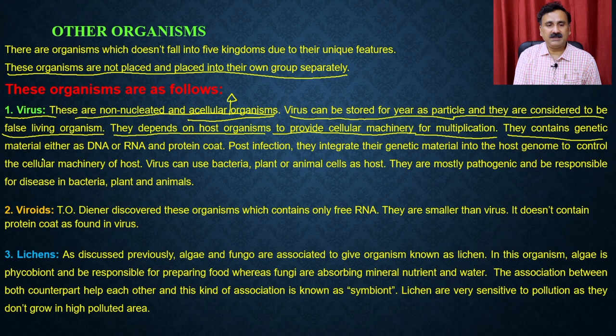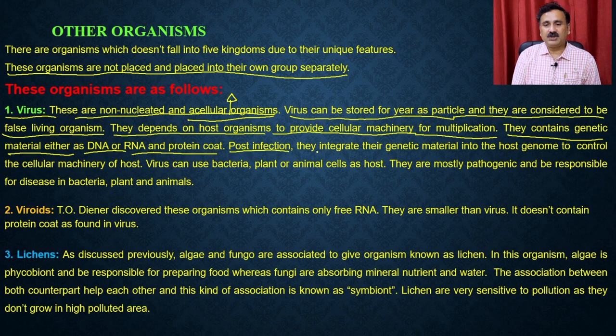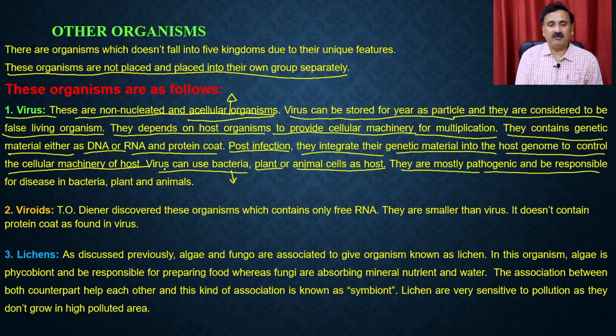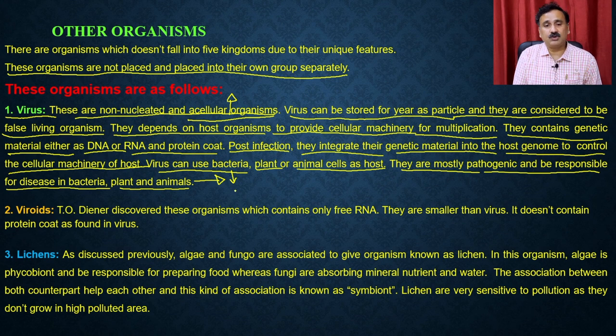Viruses contain genetic material — either DNA or RNA — and protein coats, which is why they are considered living organisms. Post infection, they integrate their genetic material into the host genome to control the host's cellular machinery. Viruses can use bacteria, plant, or animal cells as hosts. They are mostly pathogenic, responsible for diseases in bacteria, plants, and animals — a familiar example being the coronavirus. Viroids, discovered by T.O. Diener, are even smaller than viruses, contain only free RNA, and lack the protein coat found in viruses.